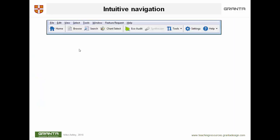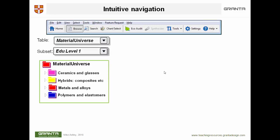Let's now see how you can use it. When you open the software, this is the toolbar that appears across the top of the screen, and it has three buttons: Browse, Search, and Chart Select. We're not going to talk about the Chart Select button in this unit — that's the subject of Unit 2. What we're going to do is look at Browse and Search.